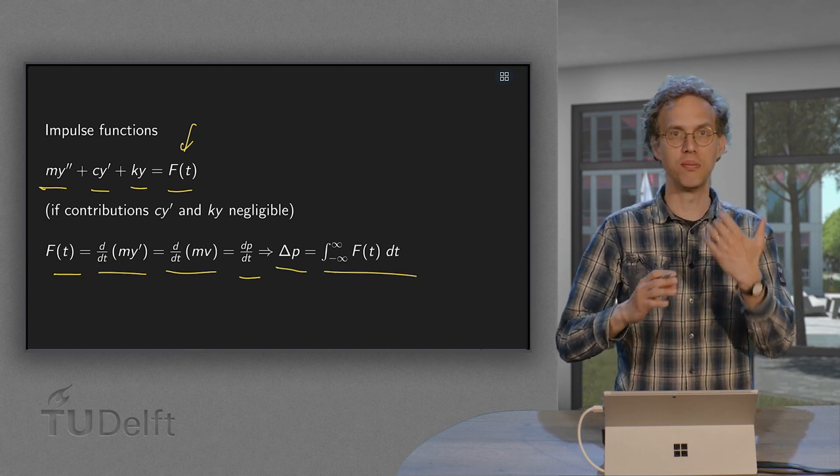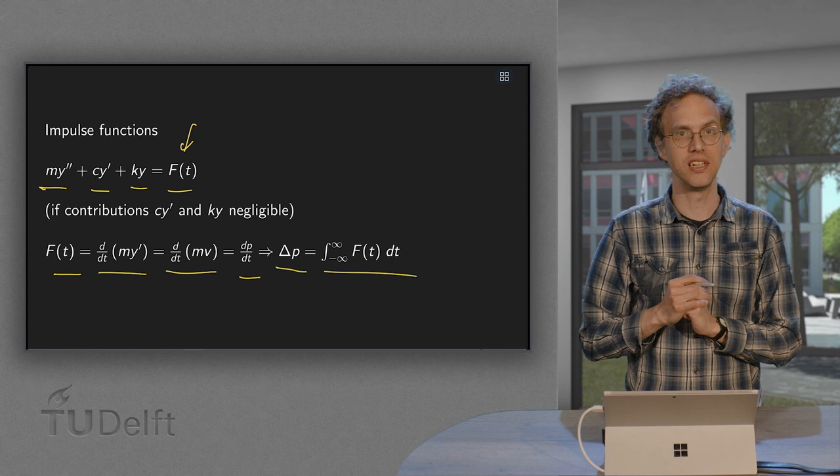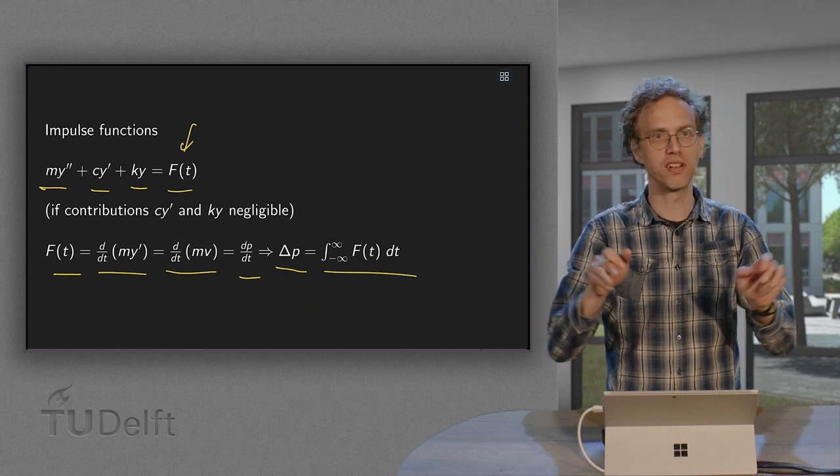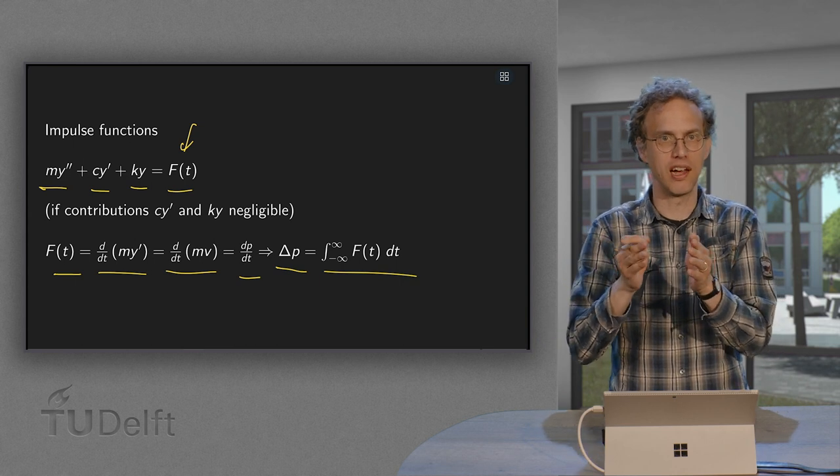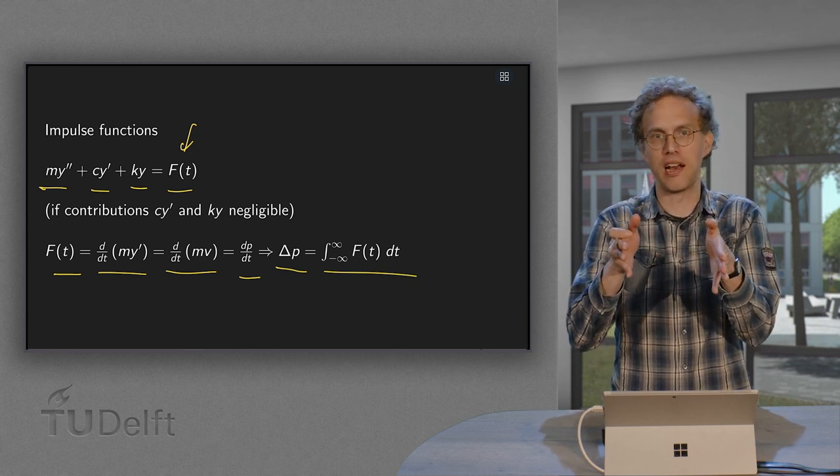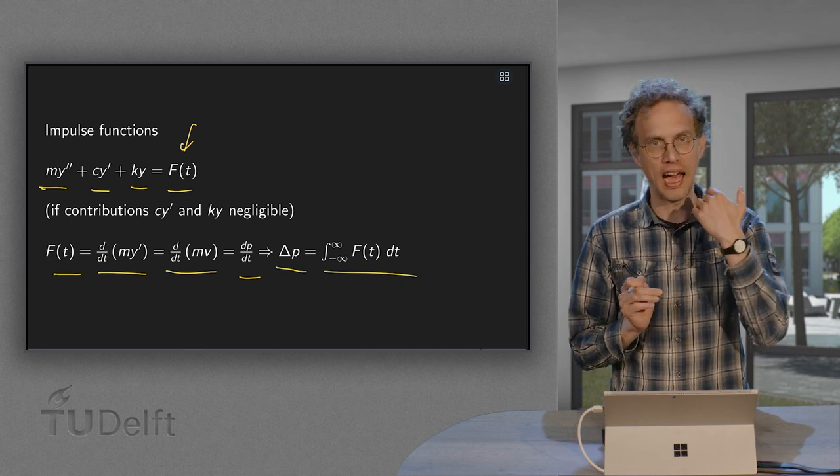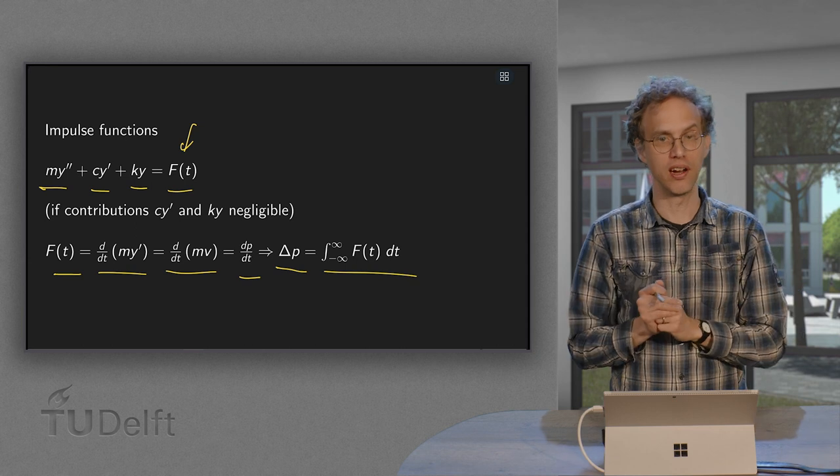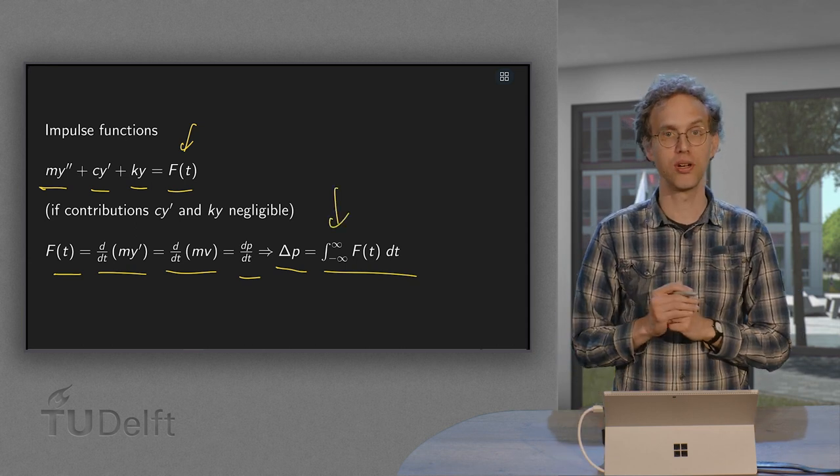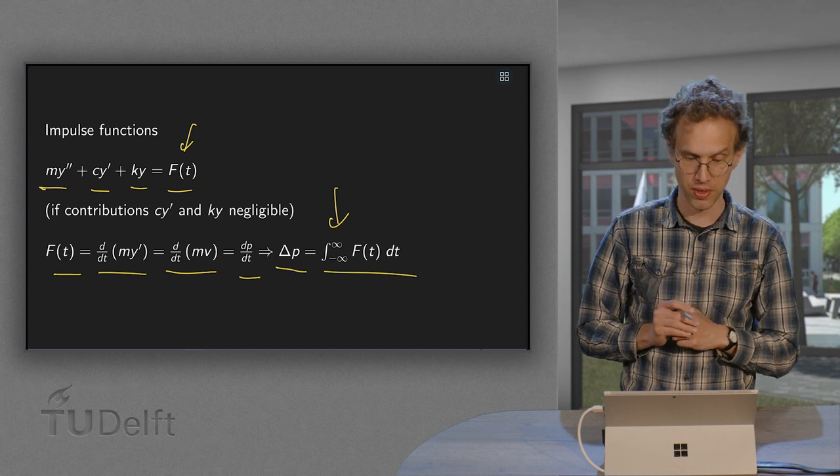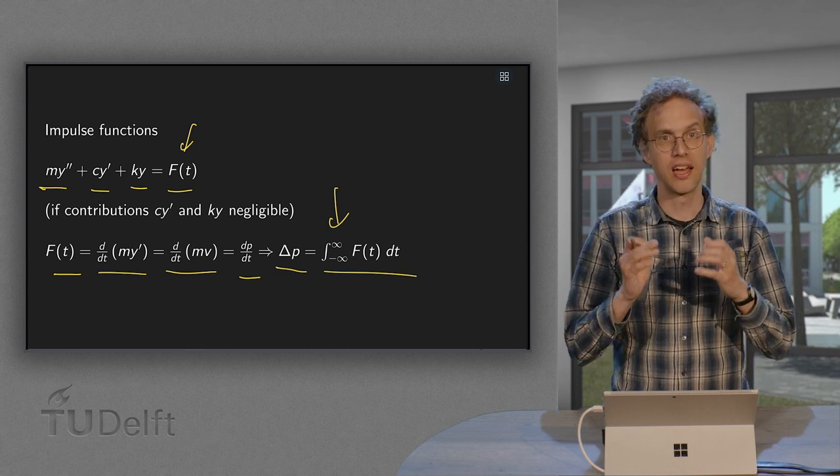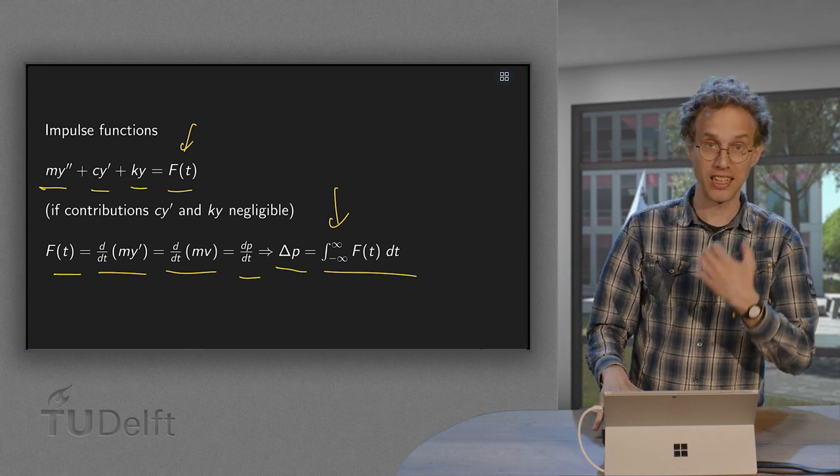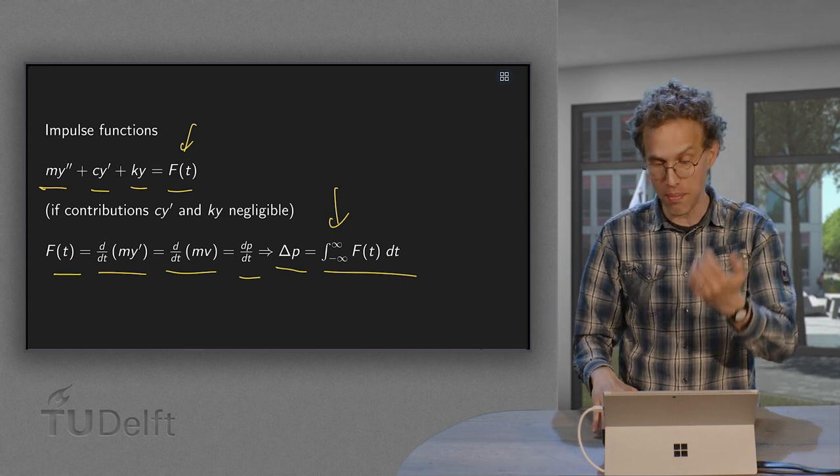And I put here as boundaries minus infinity up to plus infinity. That doesn't really matter because this force is zero most of the time. So you could also put like minus ε to plus ε, something like that, if you add it at t equals zero. But since it's zero everywhere else, you could put the boundaries up to infinity also. So that is what this capital F of t does. Its integral adds a certain momentum. That is why it's called an impulse function.